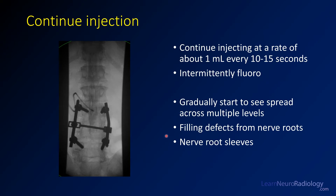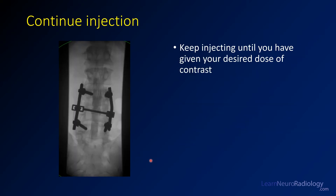Continue gradually injecting at a rate of about a milliliter every 10 to 15 seconds. Use fluoroscopy intermittently — just step on and off the pedal — and you'll see contrast spreading across multiple levels, going all the way up to T12 where the last rib is, with filling defects created by the nerve roots of the cauda equina. You'll also see the nerve root sleeves as little outpouchings underneath the pedicles. Those are all clues to confirm you're in the thecal sac. Keep injecting until you've given your desired dose, then disconnect your tubing, replace your stylet, and remove your needle.